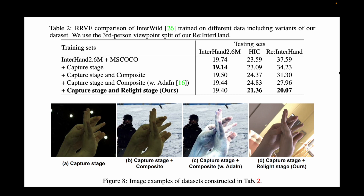Experimental results show the effectiveness of our relighting stage. Adding more data from the capture stage alone does not affect results on HIC, a natural dataset. Simple compositing and compositing with adaptive instance normalization actually negatively affect results because they do not preserve skin color. Our relit images reduce the error on HIC, showing that images with diverse appearances are beneficial for 3D interacting hand recovery in the wild.